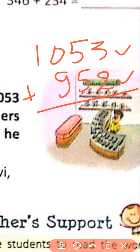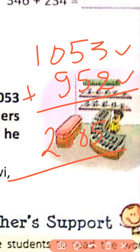We have to find the total, so we add these numbers. After adding, we will get the sum, which will be the total number of customers. So we can write here: he attended 2005 customers in that particular week.